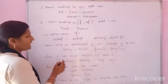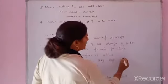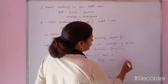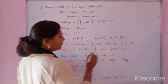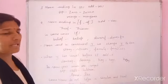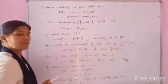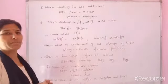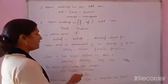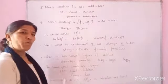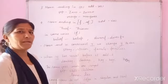But when Y has a vowel before it, jab Y ke pehle vowel ho, to usmein hum only single S use karenge. In some cases, words are changed completely — jaise 'child' becomes 'children', 'woman' becomes 'women', 'man' becomes 'men'.